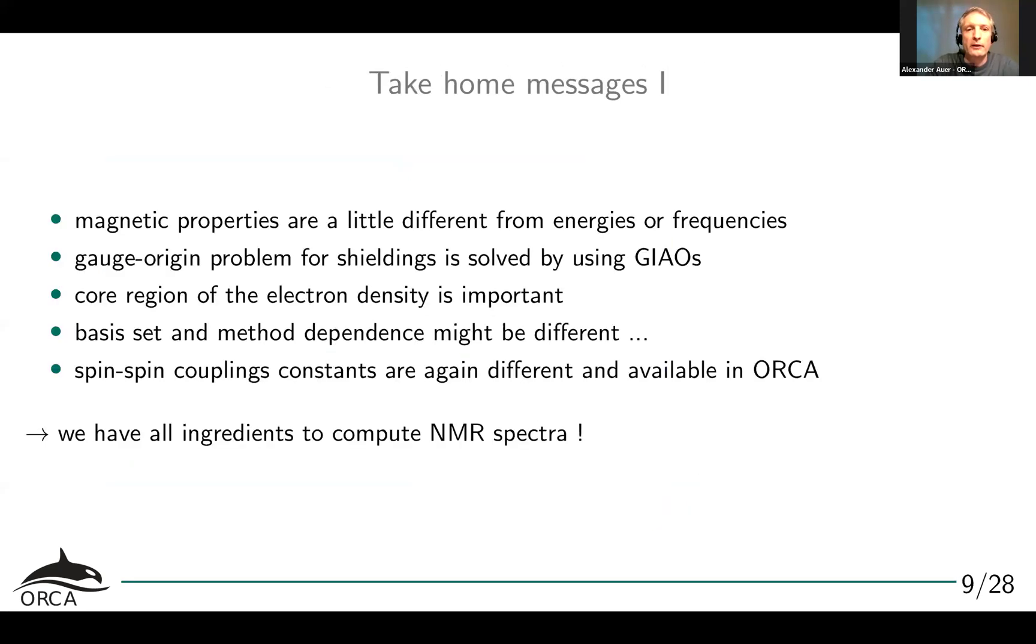So let's look at a typical example. Before that, just sum up: magnetic properties are a little bit different from energies and frequencies. So you might have to use different basis sets, different functionals. Gauge origin problem is already solved by using GIAOs. But we've seen these high powers of 1 over r, so we need to describe the core region very well. If you have heavy elements that use ECPs, calculating NMR properties with ECPs is not advisable. Use an all-electron basis set so your electron density close to the nucleus is okay. Basis set and method dependence might be a little bit different.